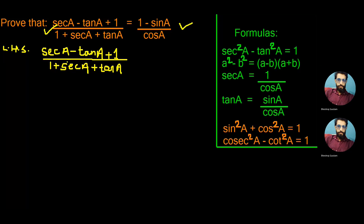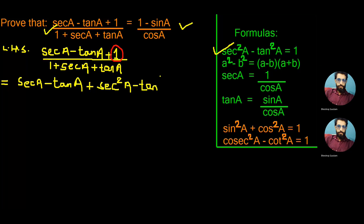Let's start from LHS of this question. We continue with sec a minus tan a, and now we replace this 1 by one of the basic trigonometric formulas, that is sec²a minus tan²a is equal to 1. So we write sec²a minus tan²a in the numerator, divided by the same denominator, that is 1 plus sec a plus tan a.